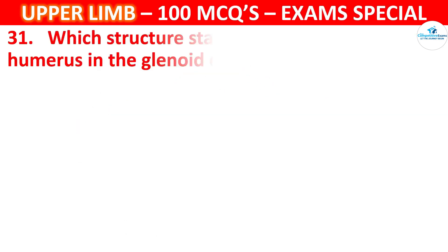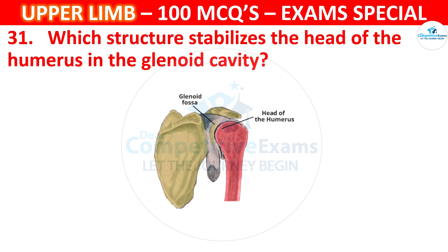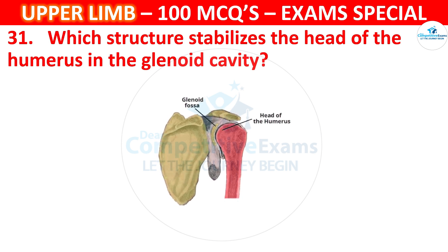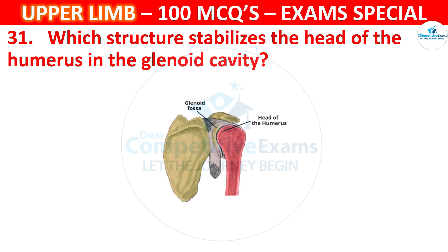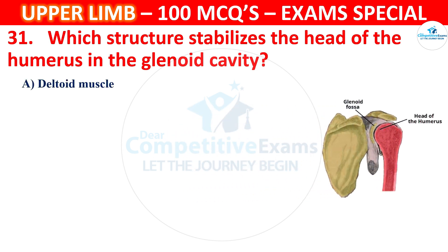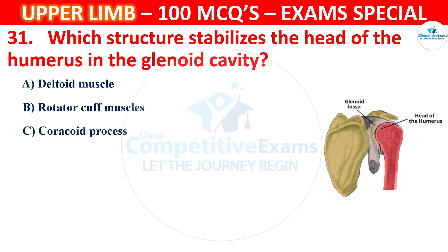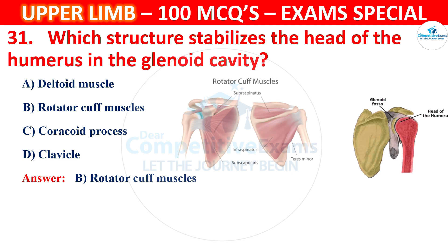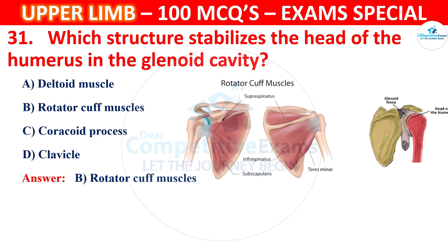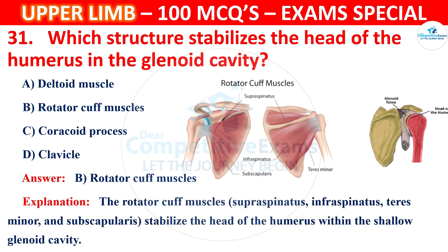Question number 31: Which structure stabilizes the head of the humerus in the glenoid cavity? Options: deltoid muscle, rotator cuff muscles, coracoid process, or clavicle. The correct answer is B, rotator cuff muscles. The rotator cuff muscles — supraspinatus, infraspinatus, teres minor, and subscapularis — stabilize the head of the humerus within the shallow glenoid cavity.